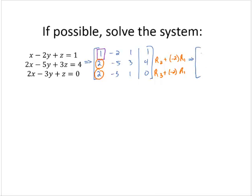So that does not change the first row at all. Now for the second row, I'm going to take row 2 plus negative 2 times row 1 and use that to replace row 2. So I'll have a 0. Negative 5 plus negative 2 times negative 2 would be negative 1. 3 plus negative 2 times 1 would be 1. And 4 plus negative 2 times 1 would be 2.